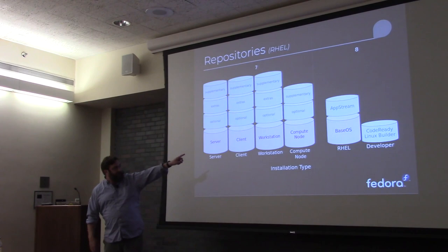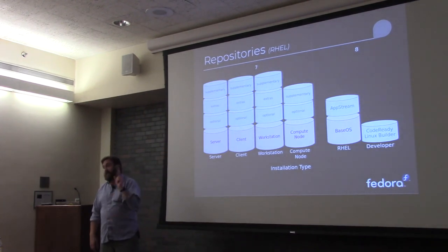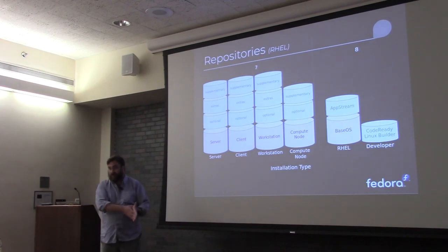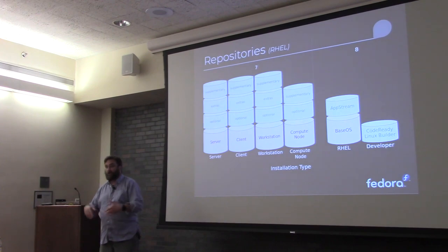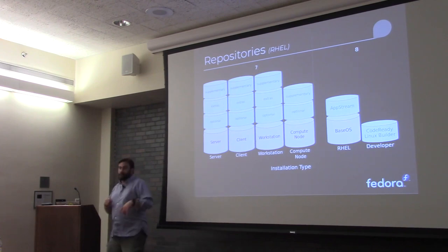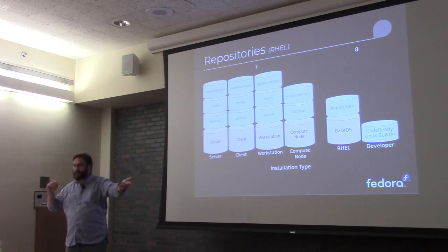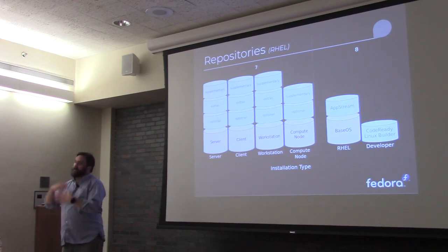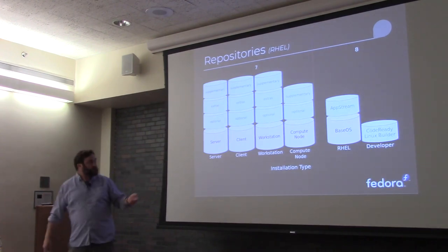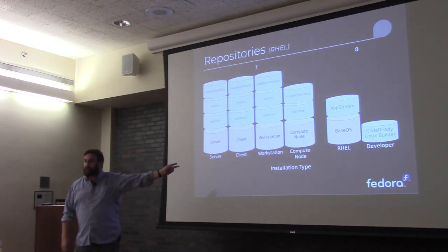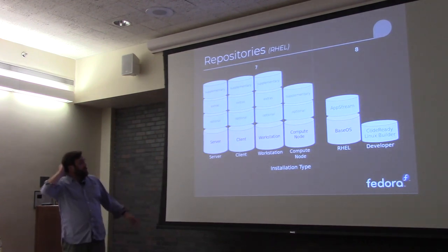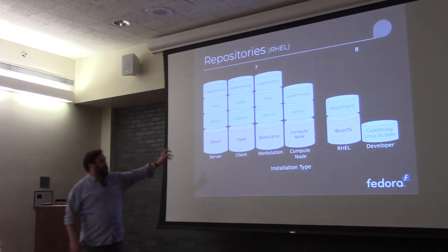AppStream can be a little bit of a misnomer because it includes non-modular RPMs as well as modular RPMs. For example, bind is probably a non-modular RPM — there's just one version sitting in AppStream with no multiple streams. Whereas there are definitely two different streams for Postgres. So the term AppStream covers both regular RPMs and modular ones.